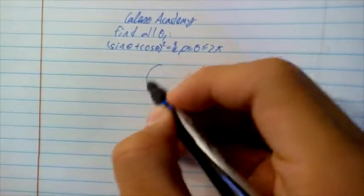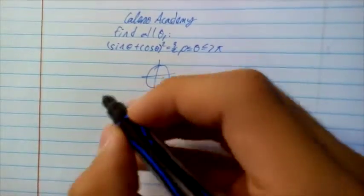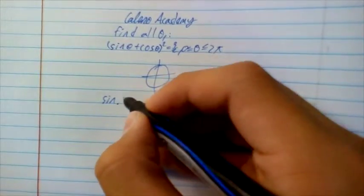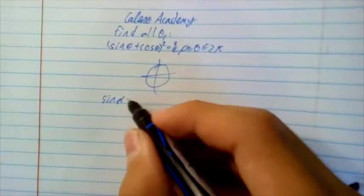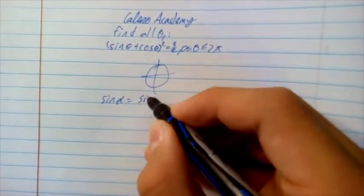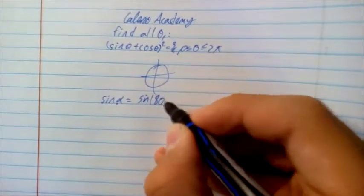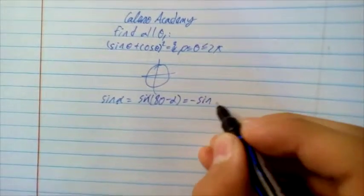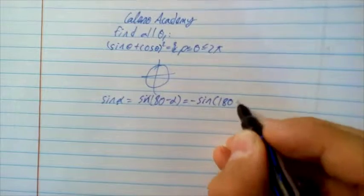The unit circle, our little guy over here, he says that sin of some angle alpha is going to equal sin of 180 minus alpha, which will equal minus sin of 180 plus alpha.